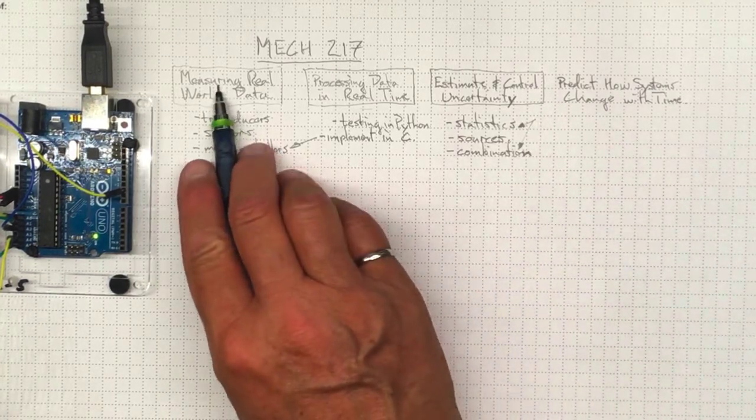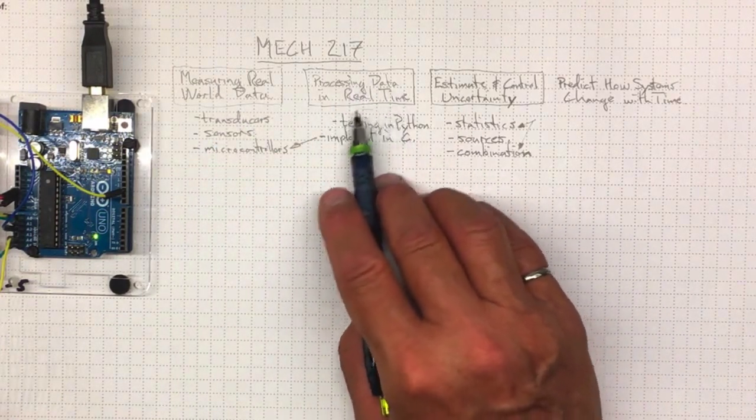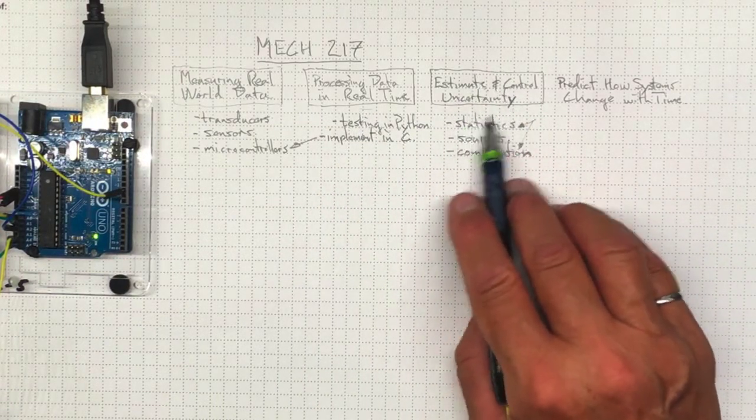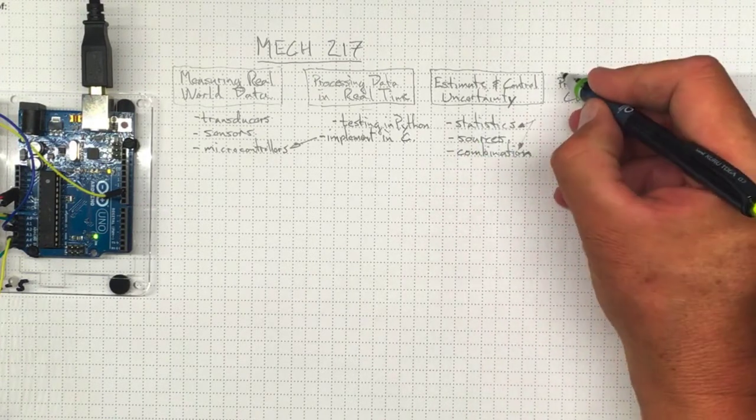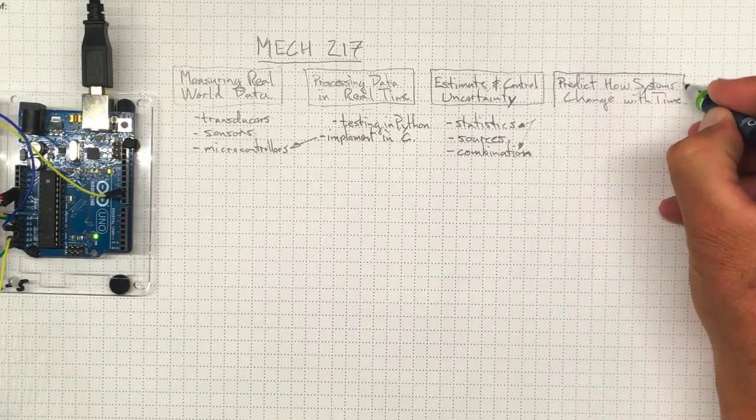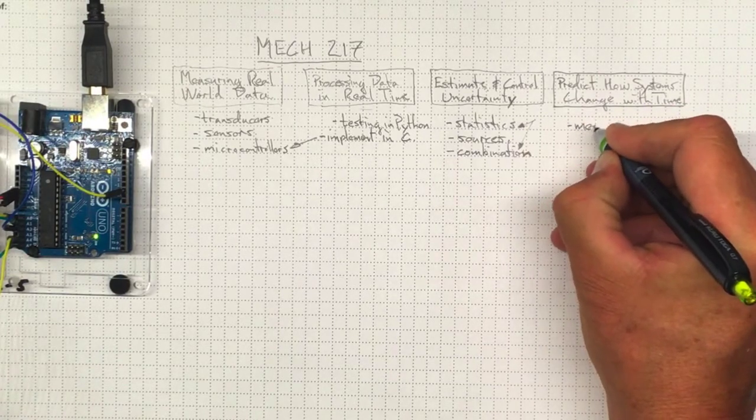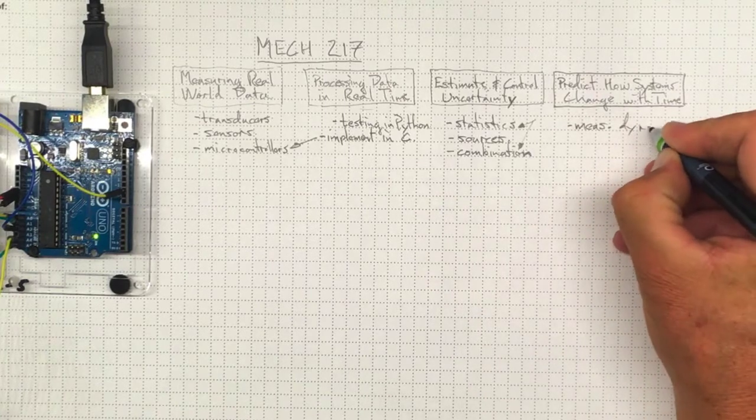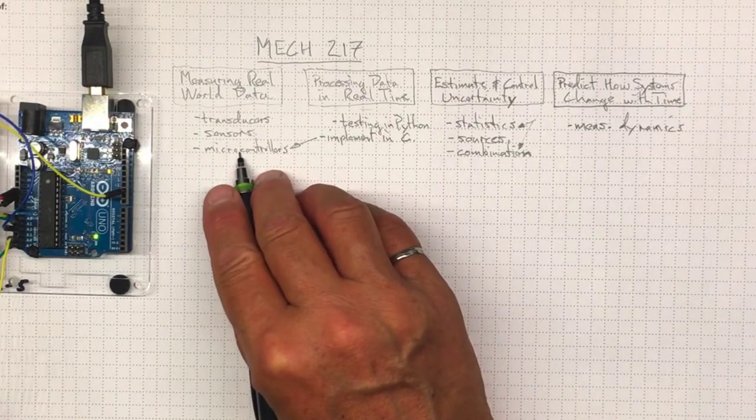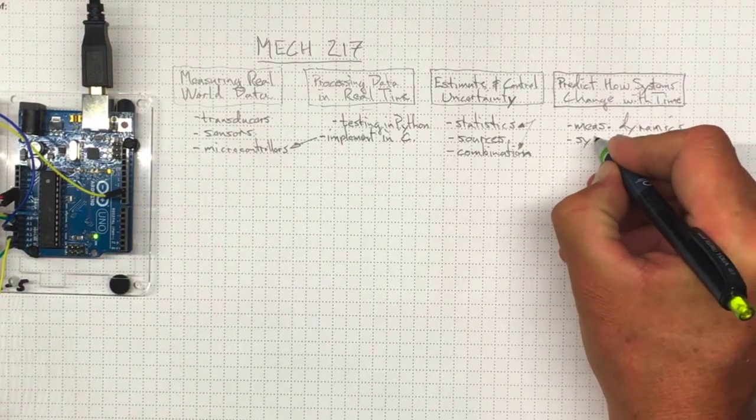Finally, if we're going to use this measured real-world data with some processing to tell us what's going on with other factors in our measurement, and we have a reasonable idea of what our uncertainty is about our measurements, then we should be able to predict how the systems that we're measuring are going to change with time. And to do that, we have to understand the measurement dynamics. How quickly our measurement devices, our transducers and sensors and our microcontroller can keep up with measuring what's going on. And we also need to be able to understand the system dynamics.